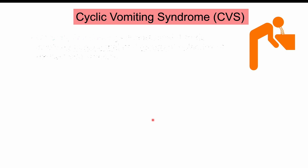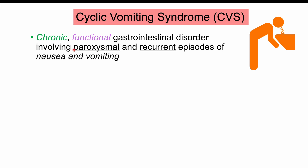Cyclic vomiting syndrome, or CVS, is a chronic functional gastrointestinal disorder involving paroxysmal and recurrent episodes of nausea and vomiting. It's long-lasting, so it's chronic. It's a functional disorder, meaning the underlying cause is unknown, and it involves paroxysmal — very sudden-onset episodes of nausea and vomiting — that recur over time.